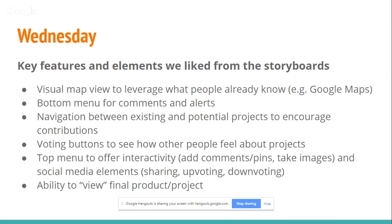Features and elements liked from their storyboards included: a visual map view leveraging mental models people are comfortable with (like Google Maps), a bottom menu for comments and alerts, the ability to navigate between existing and potential projects, the concept of voting and seeing how others in the community felt about specific projects, a top menu fostering interactivity (comments, images, sharing, upvoting, downvoting), and the ability to view the final product or project within the actual environment.